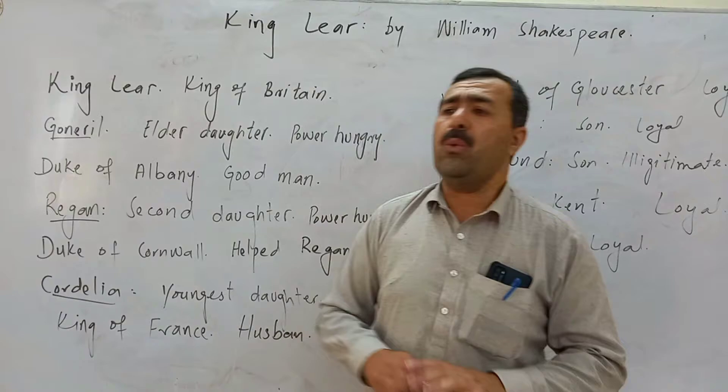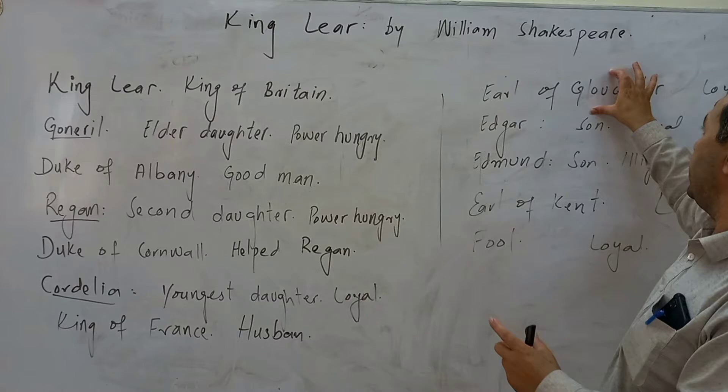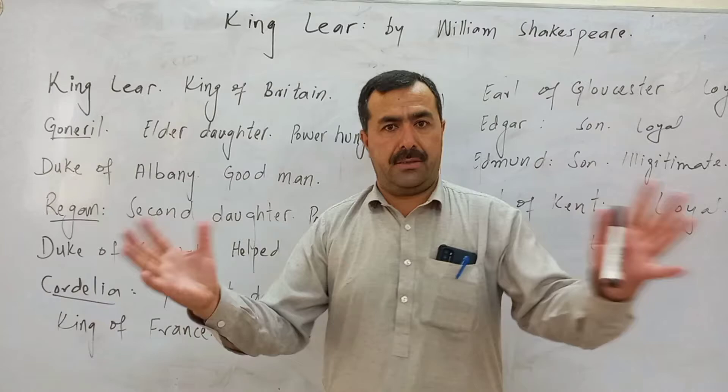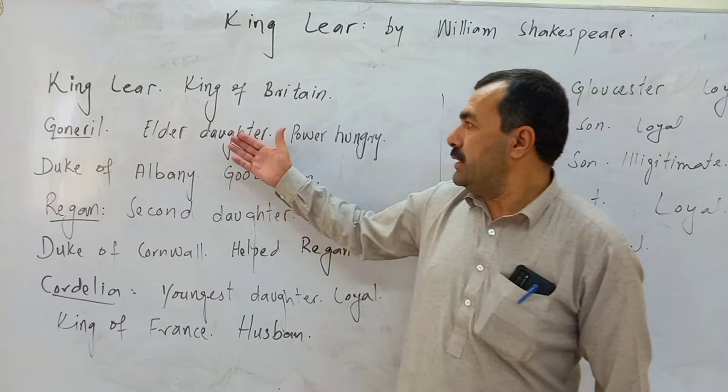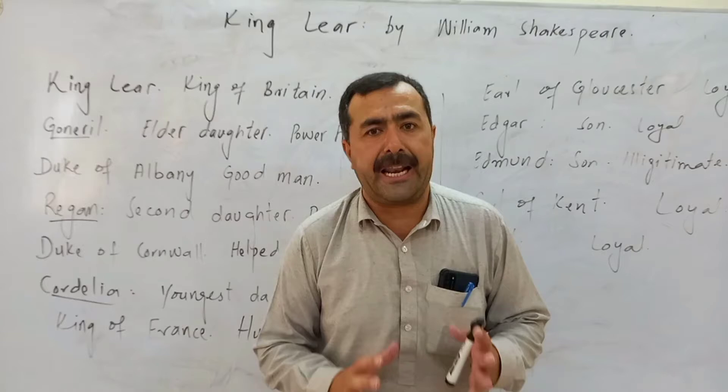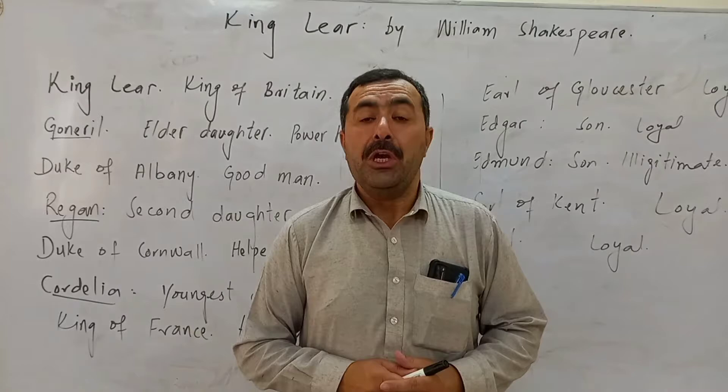Now act by act, the whole story. In Act One, when the story begins, Kent introduces himself to someone. Then the court starts and the king announces to his three daughters — Goneril, Regan, and Cordelia — that those who express their love to him will be given a share in the kingdom. He was going to share his kingdom because he had become too old.